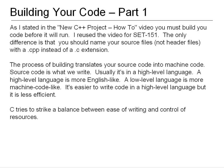The process of building translates your source code into machine code. Source code is what we write, and it's usually in a high-level language, which is more English-like. A low-level language is more machine code-like. It's easier to write code in a high-level language, but it is less efficient. C and C++ try to strike a balance between the ease of writing and control of resources.